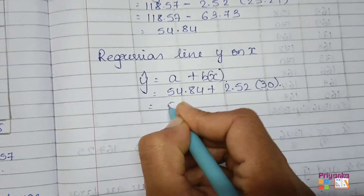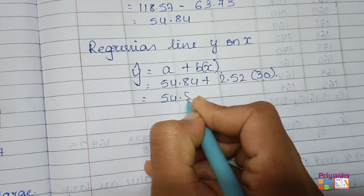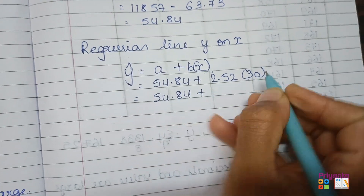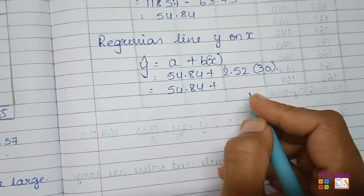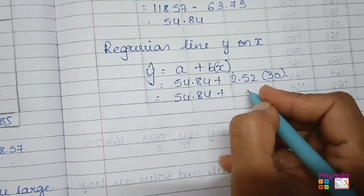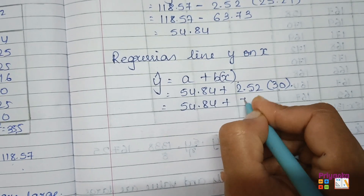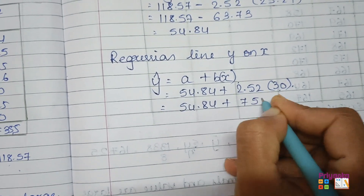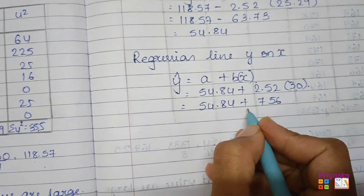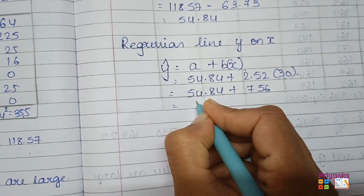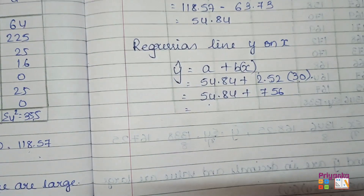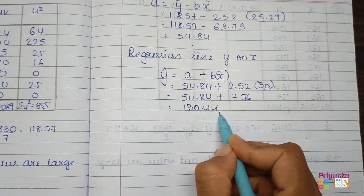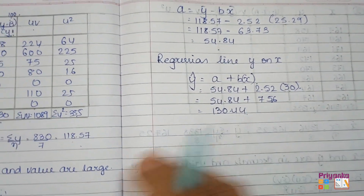Substituting: 54.84 + 2.52 × 30 = 54.84 + 75.60. Adding them gives the estimated yield as 130.44.